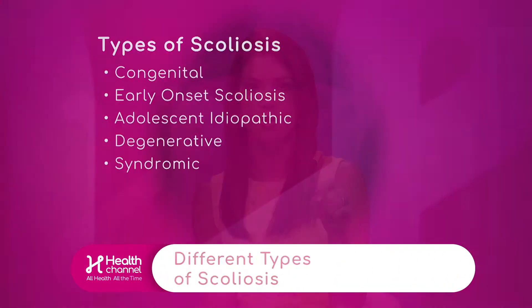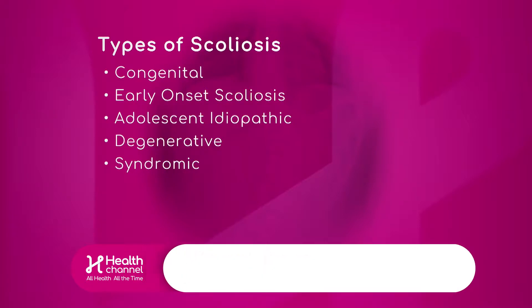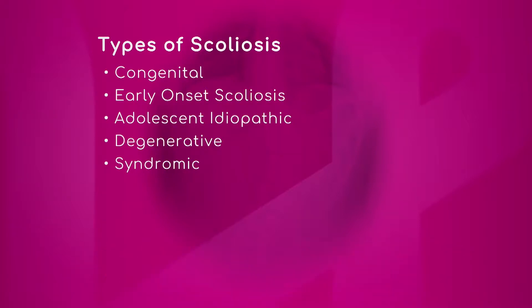According to the American Association of Neurological Surgeons, scoliosis affects between two and three percent of the American population, or about six to nine million people. We have a list of different types of scoliosis — let's go through them. The first one: congenital.